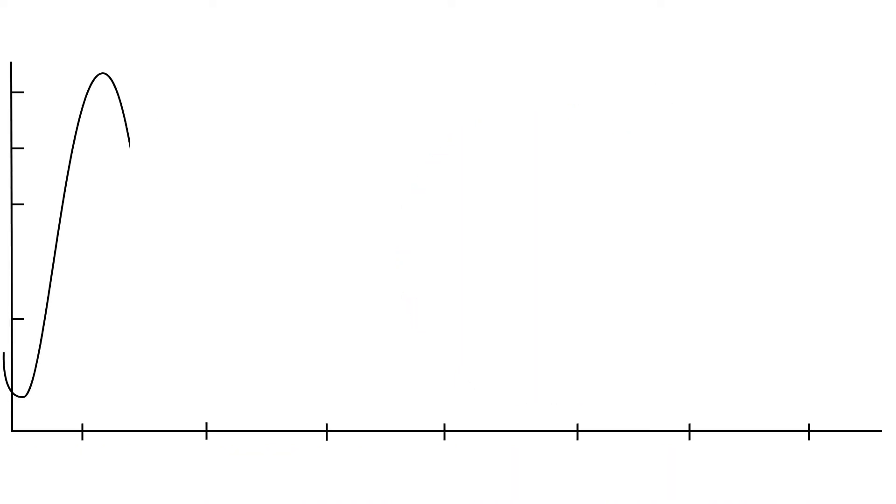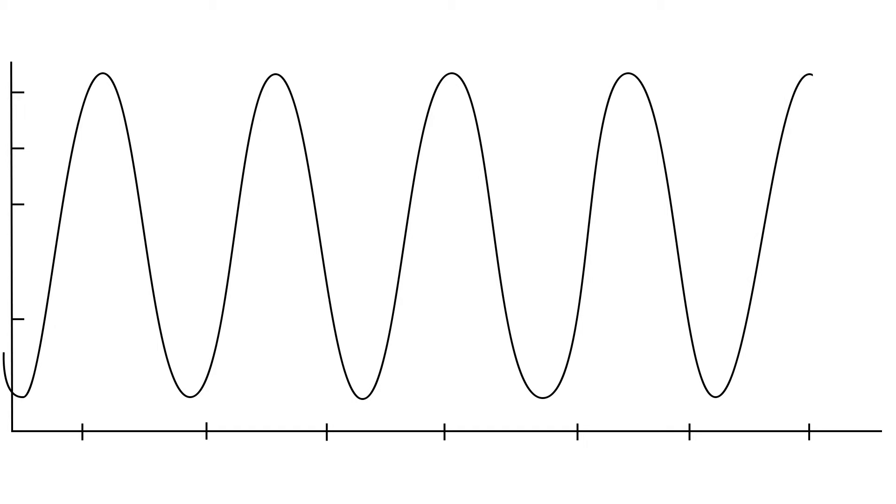This graph shows the angle deviation with just one TDC sensor getting one signal per revolution. And this is the angle deviation with a pair of pickups using many signals during one revolution.